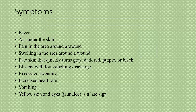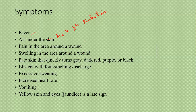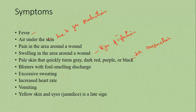The main symptoms of gas gangrene include fever when a wound is contaminated; air under the skin due to gas release; pain around the wound due to decreased oxygen supply; swelling as a sign of infection; skin that quickly turns grey, dark red, purple, or black due to decreased oxygenation; blisters with foul-smelling discharge due to bacterial growth; increased heart rate due to fever; and vomiting, yellow skin and eyes indicating jaundice.